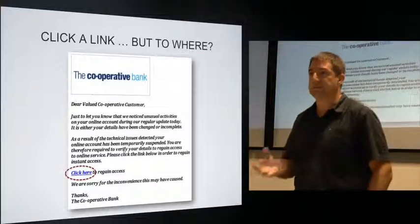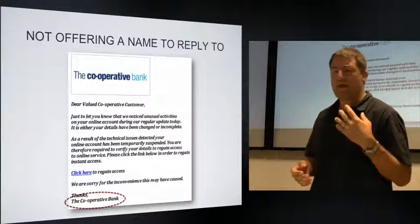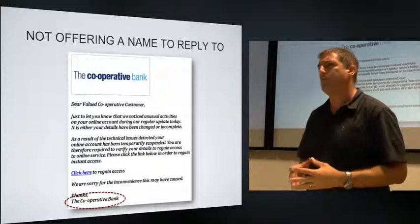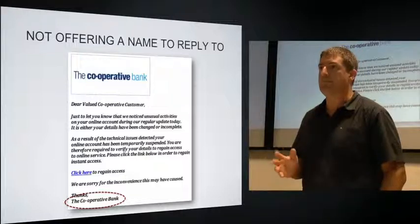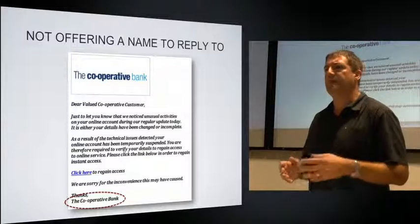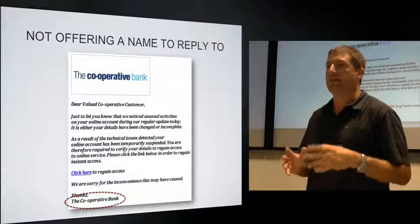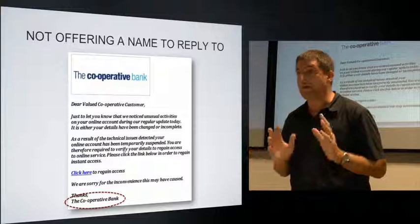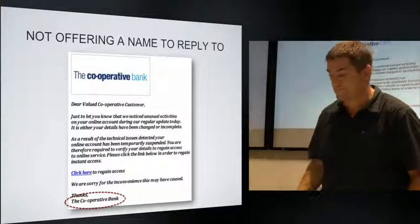The final potential indication is that there's no named sender — it's a generic sign-off from the Cooperative Bank. That doesn't necessarily mean it's bogus, as legitimate messages can be signed off the same way, but it's another indicator. It gives the user no means of contacting a particular person to verify whether the communication is legitimate. All in all, those five or so indications add up to something that looks quite suspicious.